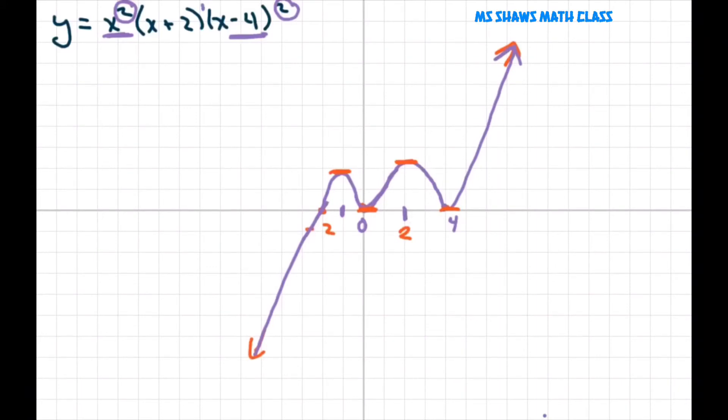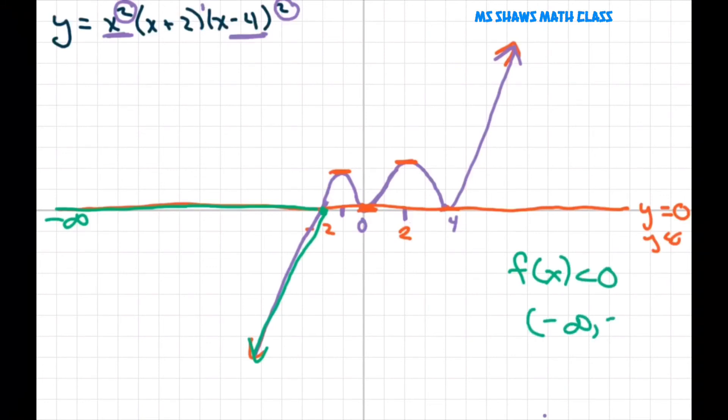And let's look at where our y is negative. So our y is negative below y equals 0. So we want y is less than 0. And that's right here. Y is less than 0 right in here. So that's from negative infinity to negative 2.